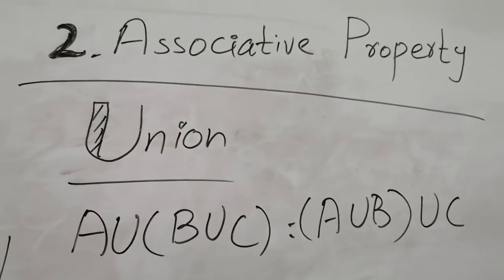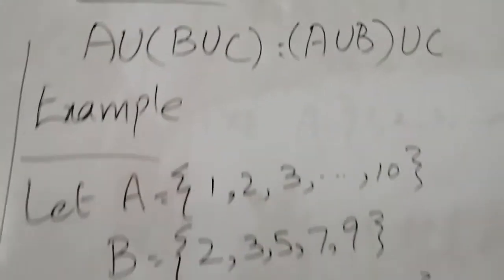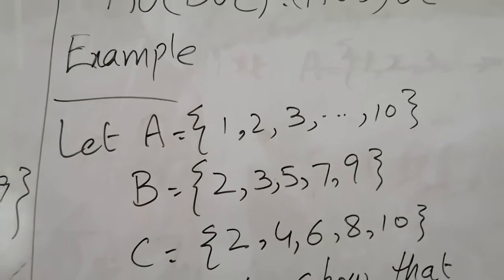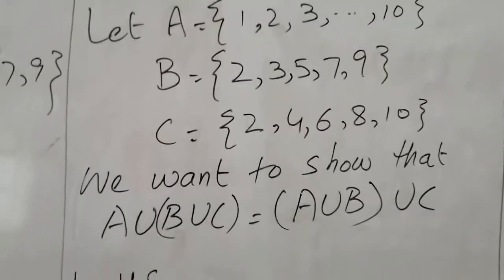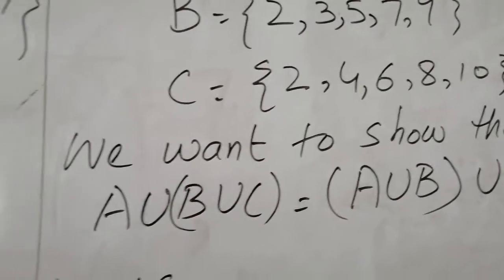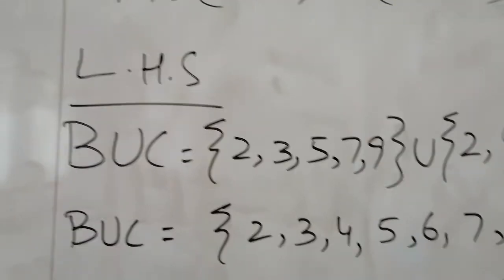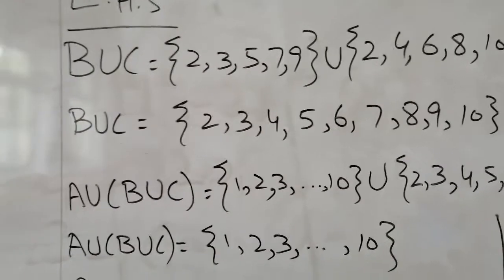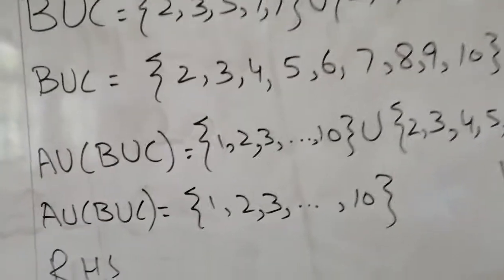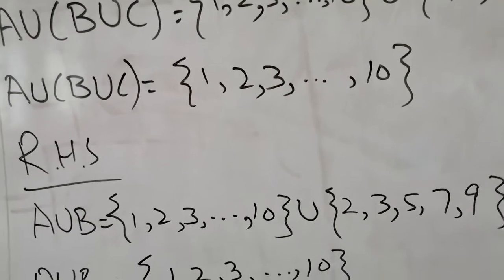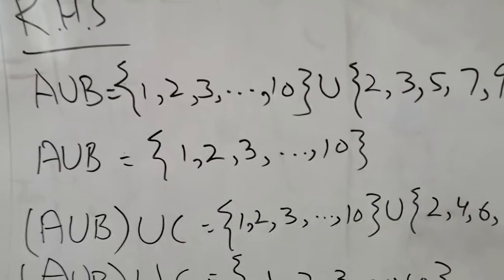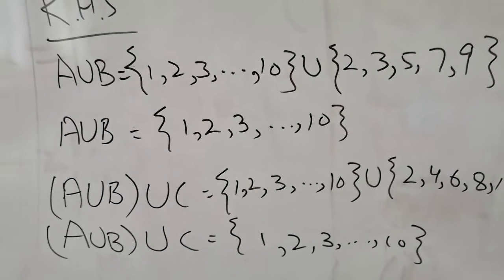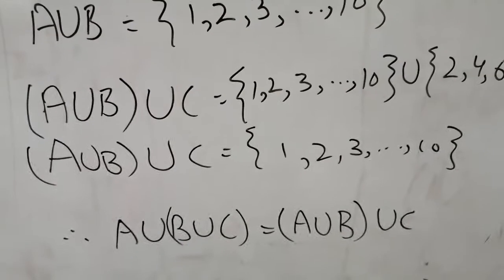Here we have three sets: A is the first ten natural numbers, B is the first five prime numbers, and C is the first five even numbers. We take the union inside the brackets first, then take the union with the remaining set. Both sides give the first ten natural numbers, so both sides are equal.